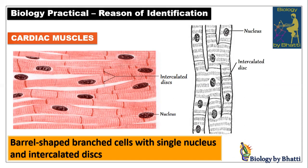Intercalated discs are found only and only in cardiac muscles and nowhere else. On the left side you see the microscope picture view, and on the right side you see the schematic diagram. I hope you enjoyed today's video — please like it, share it, and comment. Thank you very much.